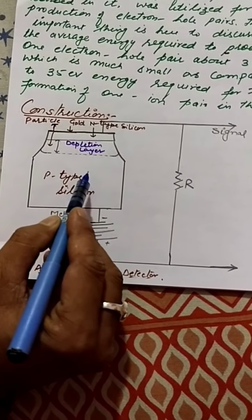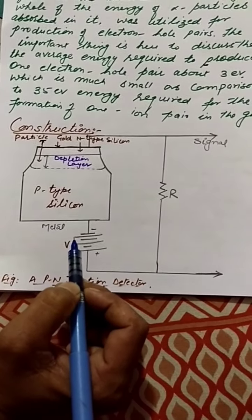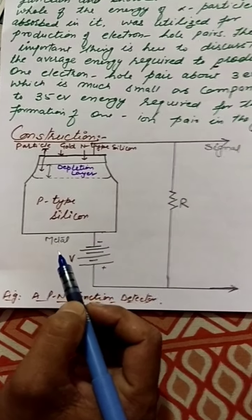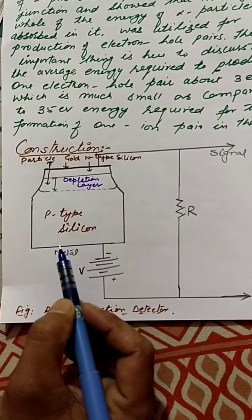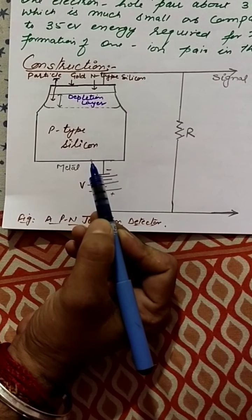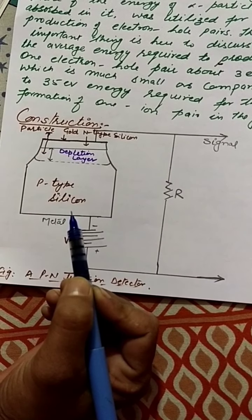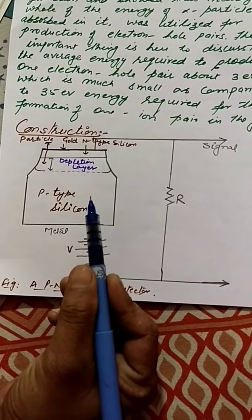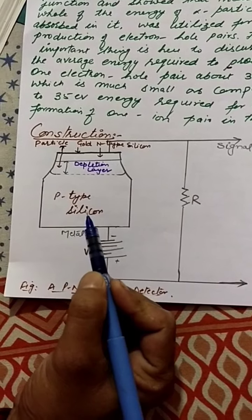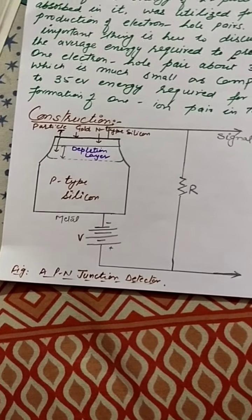Now the construction. It consists of a PN junction between P-type and N-type silicon. The N-type silicon layer is made in contact with a thin film of gold developed through evaporation technique. The question arises: why are we taking silicon here? Why not germanium? Germanium detectors have much better performance than silicon because of the large density of germanium. We are taking silicon because of its low intrinsic conductivity, which shows that the detector can be operated at room temperature without excessive leakage of current.